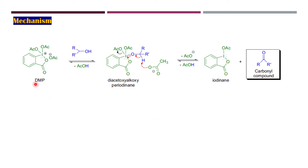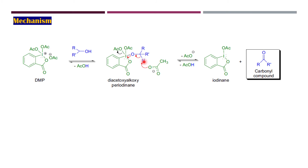Let us look at the mechanism. This is the DMP, and here we have a secondary alcohol. Once the OH group of the alcohol makes a nucleophilic attack on the positively charged iodine, one can think of the removal of H and the molecule of acetic acid going out, so this particular diacetoxyalkoxy periodinane intermediate is formed, and the acetate within the equilibrium mixture is now going to act as a base.